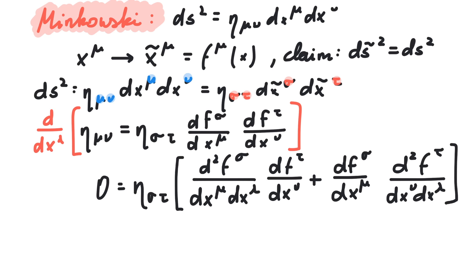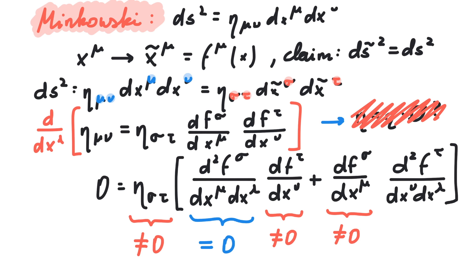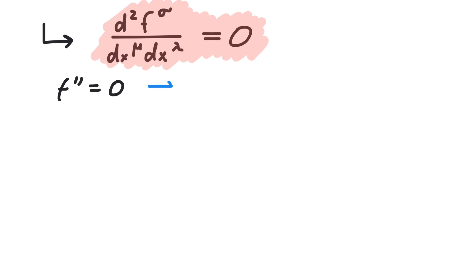Let's look at this more closely. The whole expression on the right has to be equal to zero. The Minkowski metric is definitely not zero. The df/dx also can't vanish, because in that case the above equation wouldn't have made much sense. This leaves us with the observation that the second derivative of our transformation function f must be zero. If the second derivative is zero, then the first derivative is constant, and the function itself has to be linear in x.